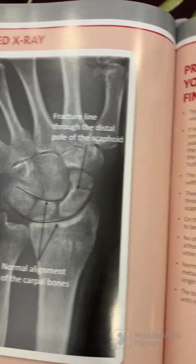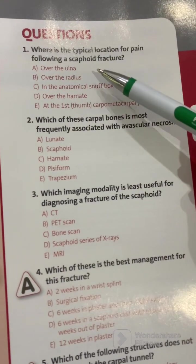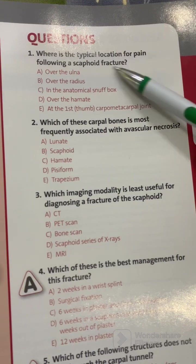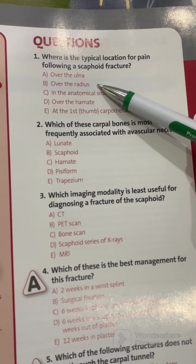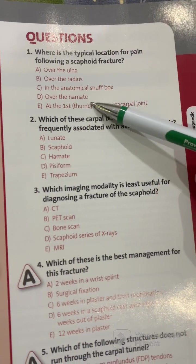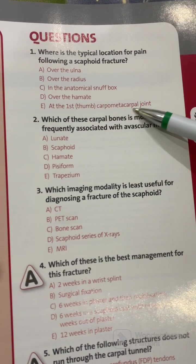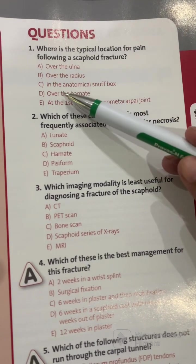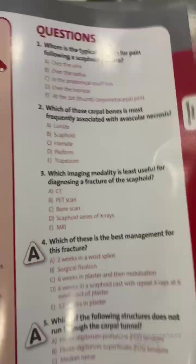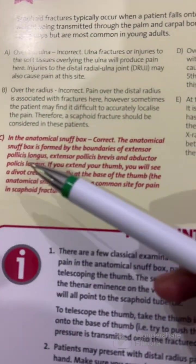Question one associated with scaphoid fractures: where is the typical location for pain following a scaphoid fracture? Options are over the ulna, over the radius, in the anatomical snuffbox, over the hamate, or at the first thumb carpometacarpal joint. The correct answer is in the anatomical snuffbox.